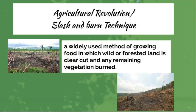We'll then be talking about the agricultural revolution when we start looking into the Mayan civilization, specifically the slash-and-burn technique. We're going to evaluate how it affects the environment and why they had to take part in it. It's a widely used method of growing food in which wild or forested land is clear-cut and any remaining vegetation is burned. We'll consider why this was used, whether it is the most effective way, and if it is still used in modern day.